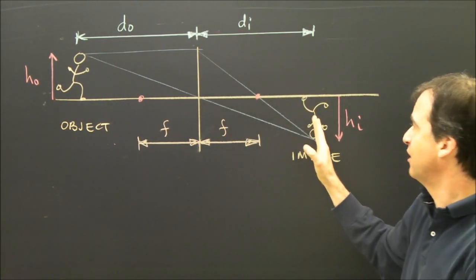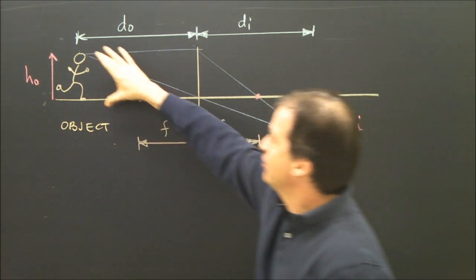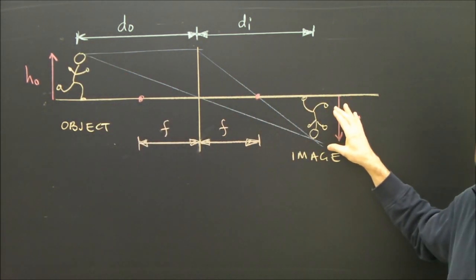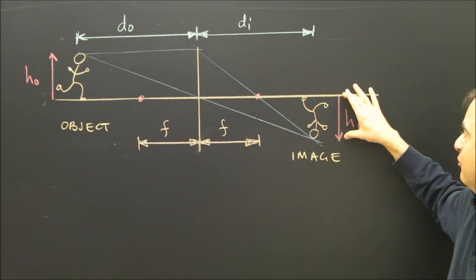DI, distance to the image. I've got HO, height of the object, which is the person running, and the image of the person over here is height of the image.